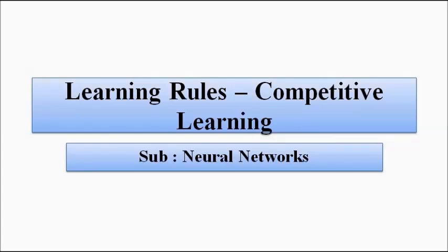Hello friends, welcome to Engineering Tutorial. We'll continue our discussion on the subject of neural networks and the basic learning rules. In this video we are going to discuss another important learning rule used for the training or learning process of neural networks, which is competitive learning. As the name suggests, all the neurons involved in the process engage in a competition.